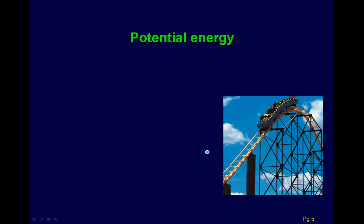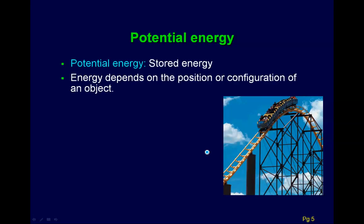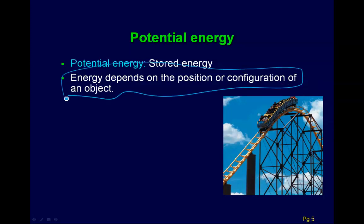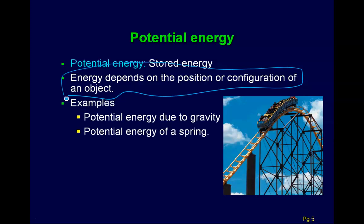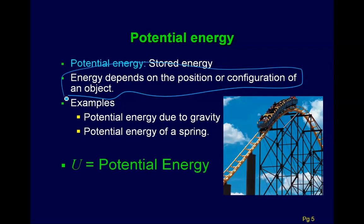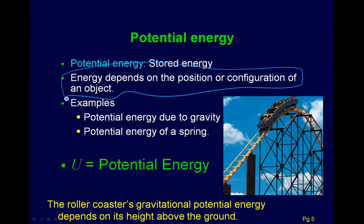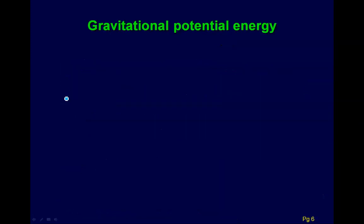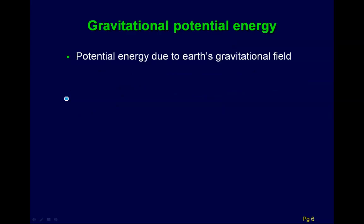Potential energy is a little bit more tricky. It's stored energy, and potential energy depends on the position or configuration of an object. Our example is gravitational potential energy; the other one we'll talk about in a bit is the energy of a spring. Potential energy is stored energy, and it depends on how whatever you're talking about is situated — its position or configuration. We use the letter U for potential energy, and in this example, a roller coaster's gravitational potential energy depends on its height above the ground.